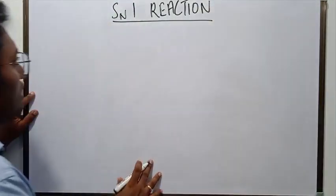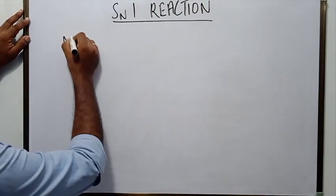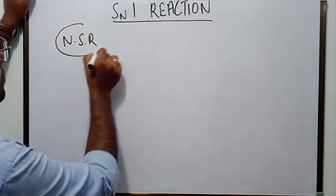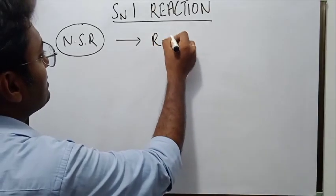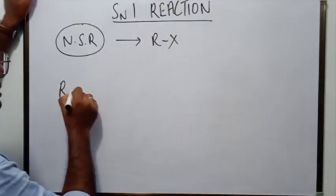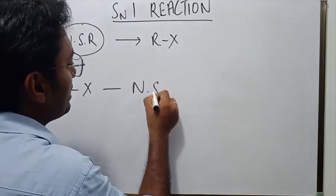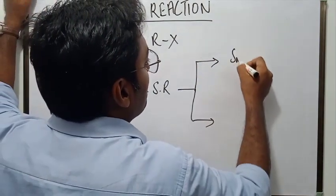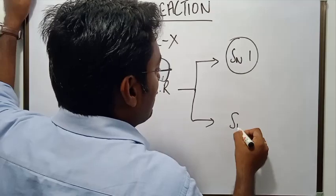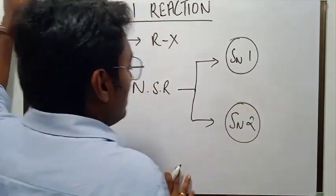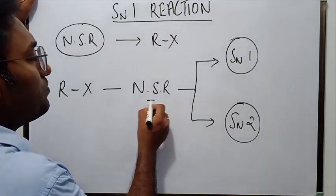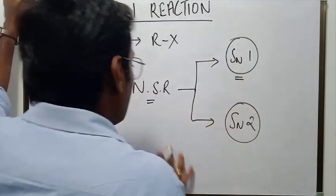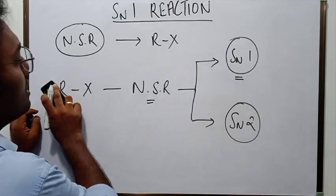SN1 reaction is an example of nucleophilic substitution reaction. Now which organic compounds show nucleophilic substitution reaction? Alkyl halides. Alkyl halide shows nucleophilic substitution reaction, which can proceed through any of the two mechanisms — it can either proceed through SN1 mechanism or it can proceed through the SN2 mechanism. In this video we will discuss about nucleophilic substitution reaction and specifically about SN1 reaction.